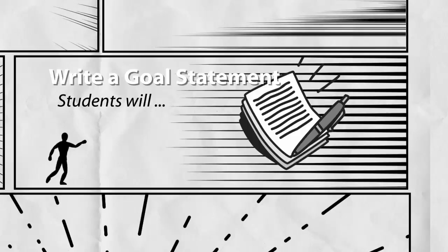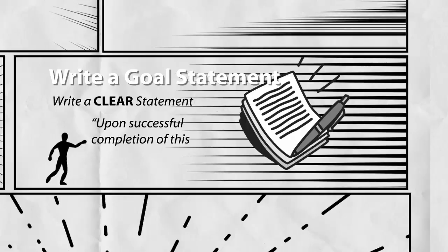Start by creating a list of behaviors that the learners will need to perform in order to demonstrate that the goal has been achieved. Then write a clear statement of the goal. I often like to use the sentence, upon successful completion of this instruction, the learner will, and fill in the list of behaviors after the will. I'm not necessarily saying that all goal statements should begin this way, but I've found it as a useful technique to help me begin to write clear goal statements.